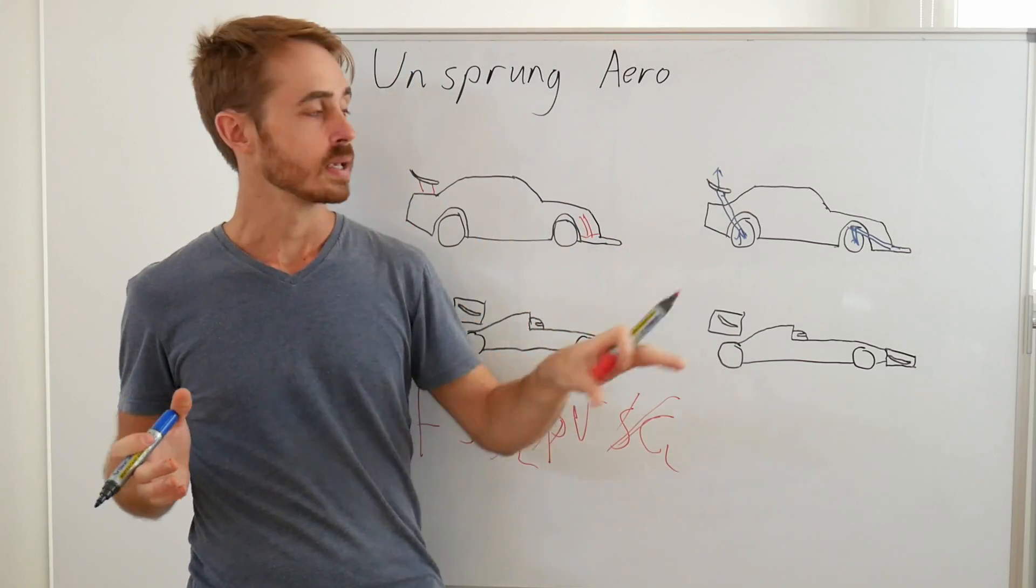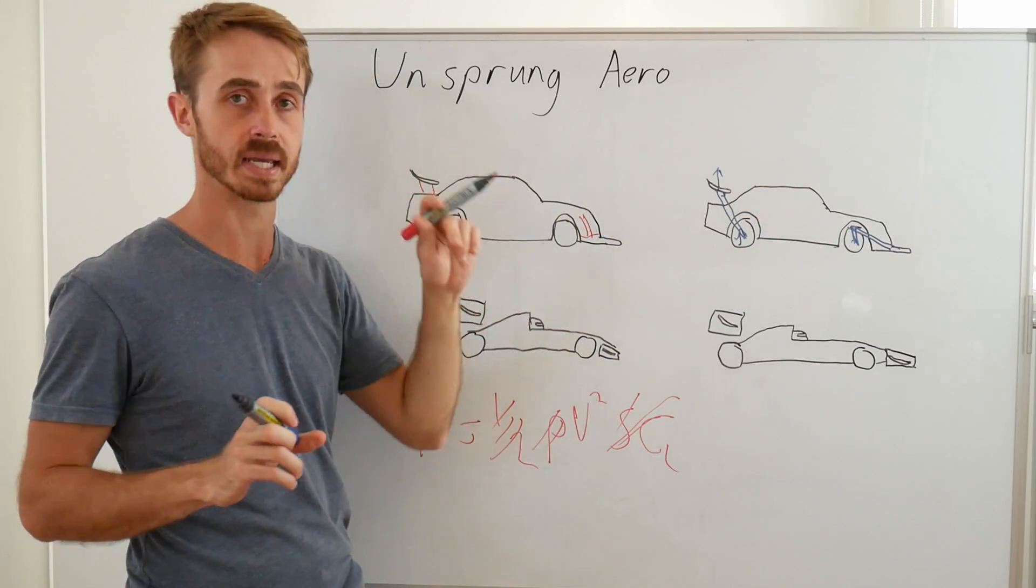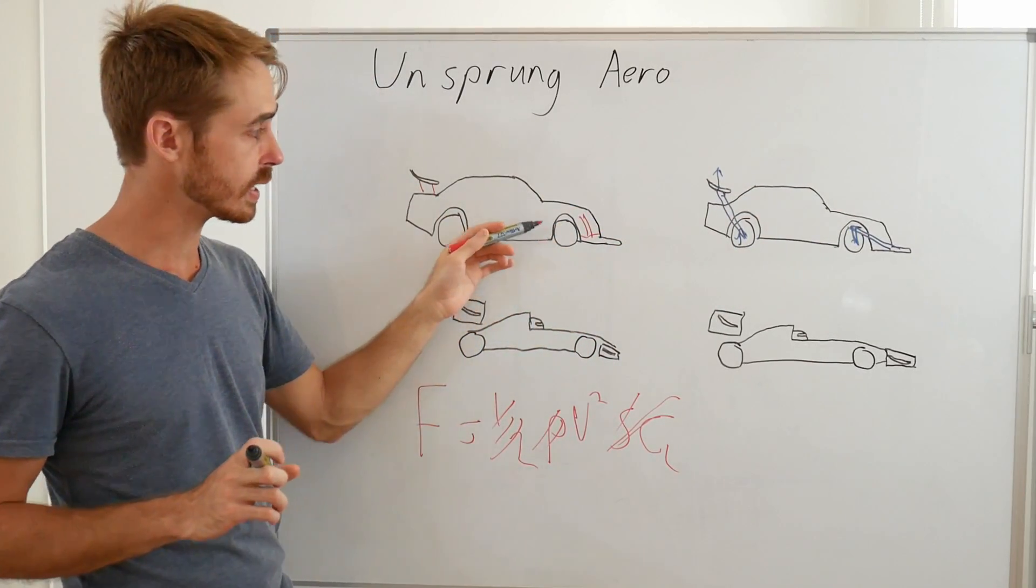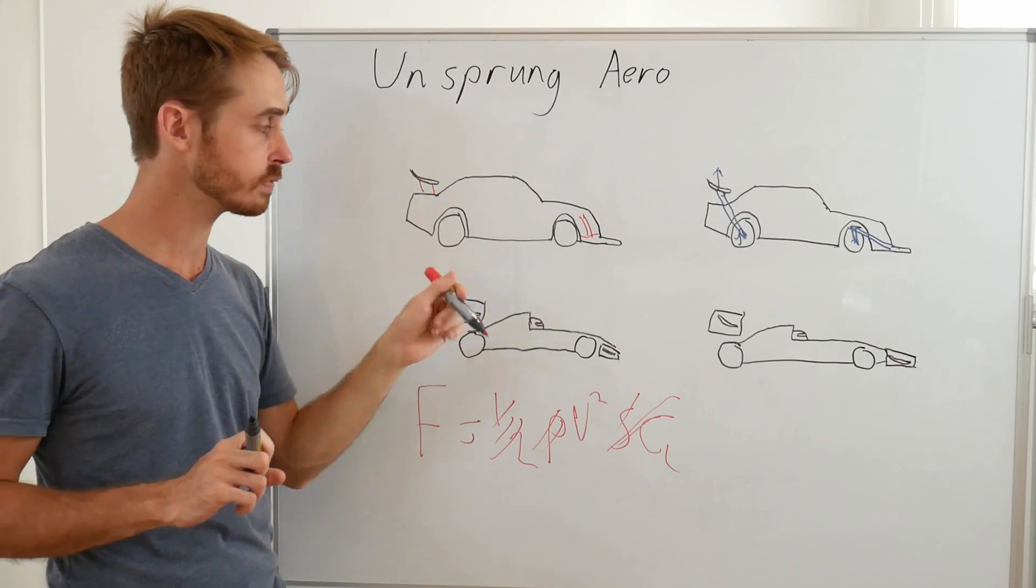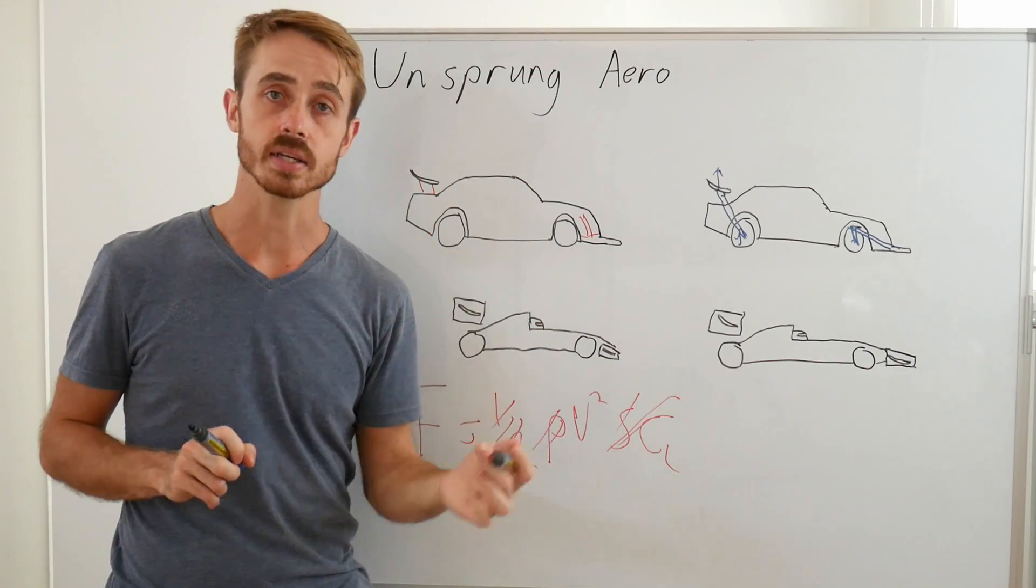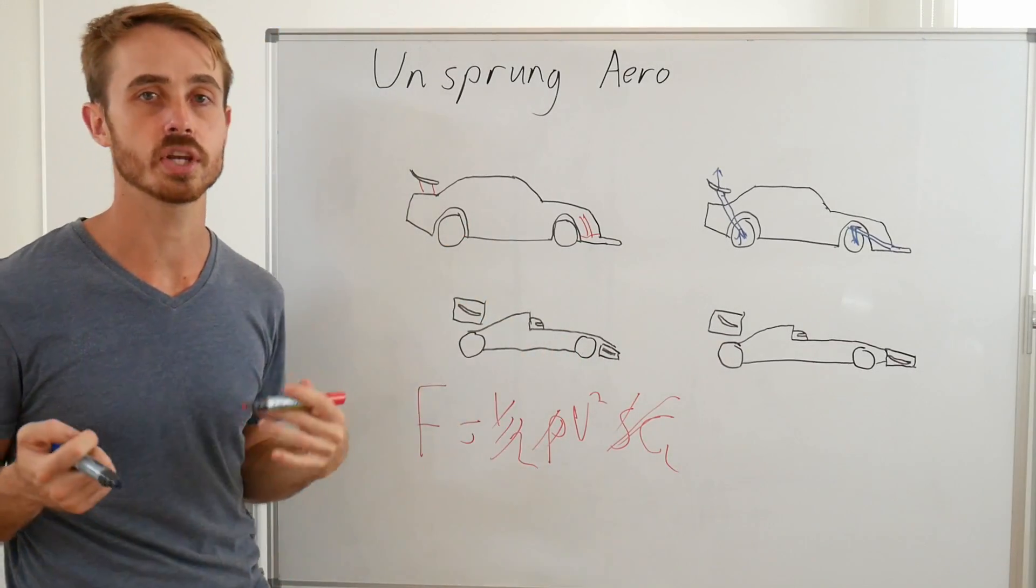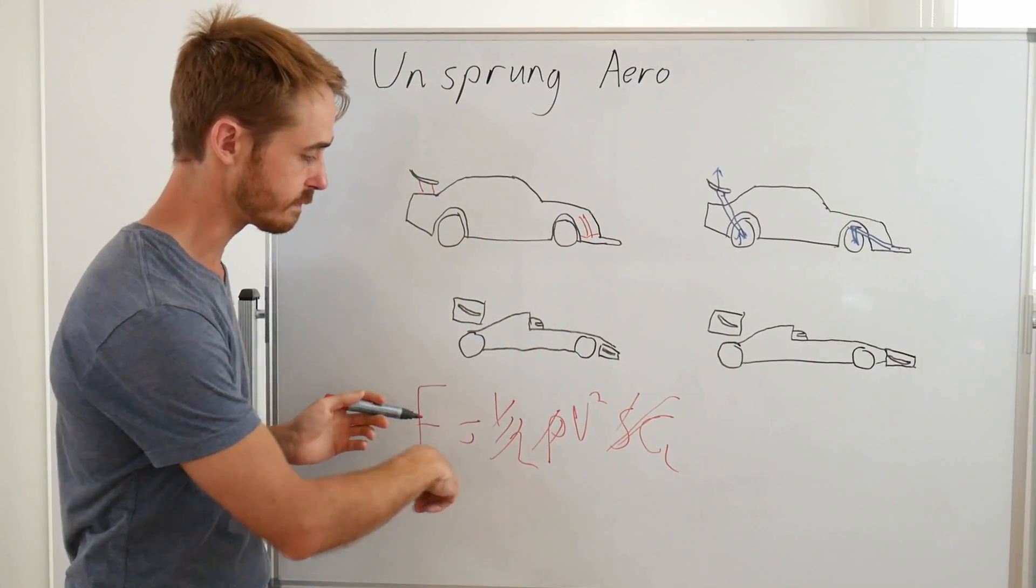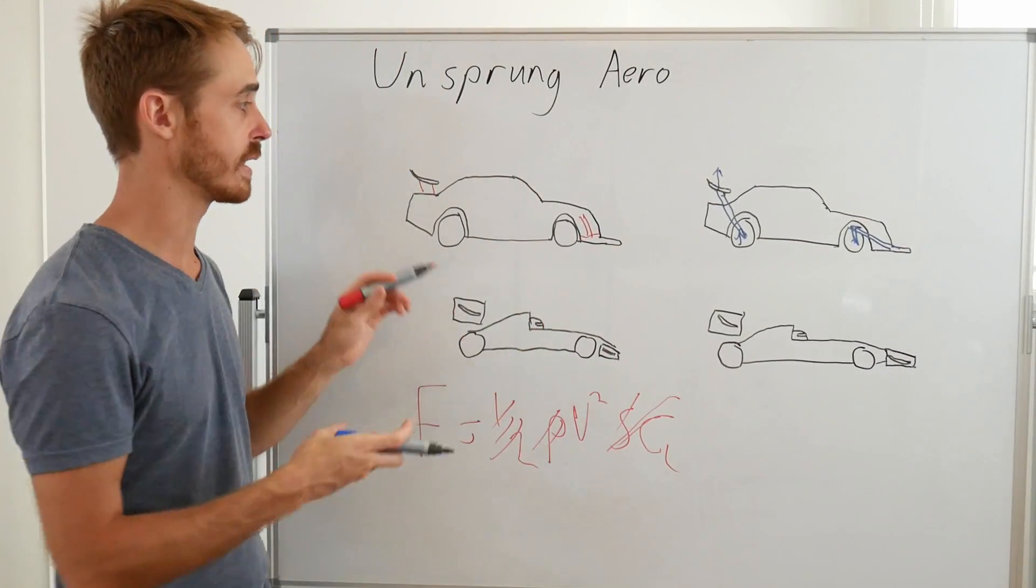As your speed increases, if the downforce is increasing in your car, you've got two things happening. One, you'll get an increased loading down from the downforce itself, and two, you'll see increased g-forces in corners. Now there's not too much we can do about the increased g-forces in corners, because that's just a function of downforce. As we drive faster, we can corner harder. So we can't do too much about that.